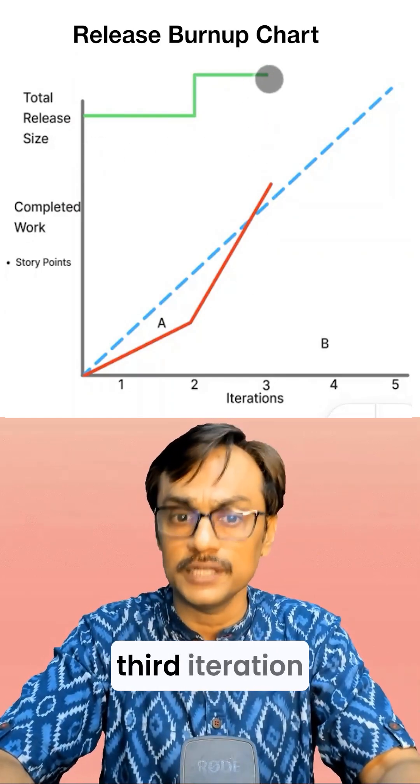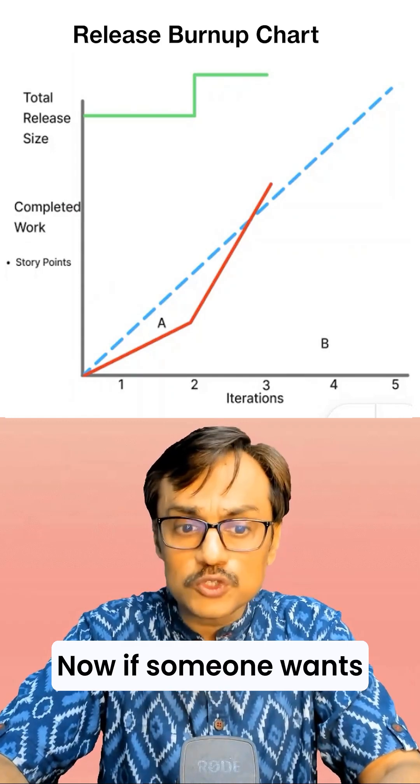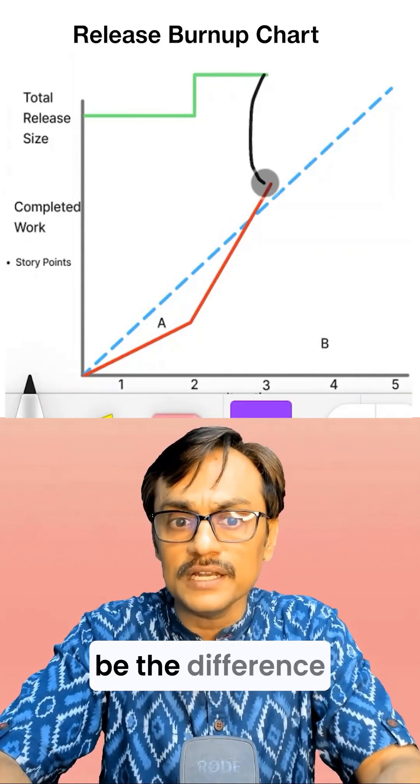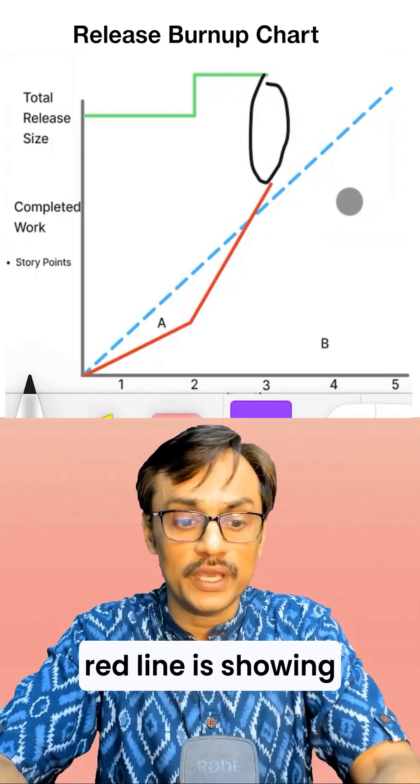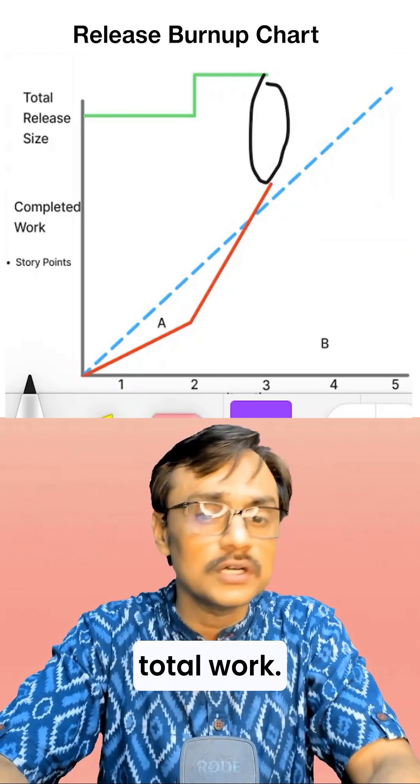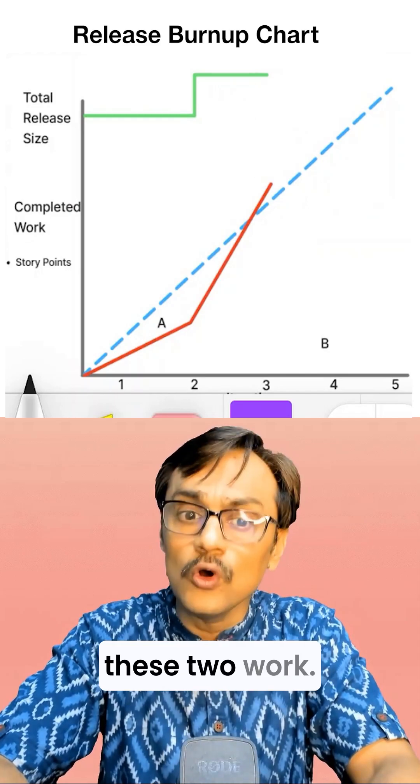It may happen after third iteration there could be a further fluctuation in the release scope. Now if someone wants to find out how much work is remaining, the remaining work will be the difference between these two. The red line is showing how much work has been completed and the green line is always showing how much is the total work. The remaining work I need to find out as a gap between these two.